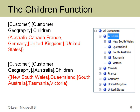The next function you'll use a whole lot is the children function. In the first example I have customer.customergeography.children. I'm saying in the customer dimension, in the customer geography hierarchy, give me the children. The default value at the top of that hierarchy is all customers, so when I ask for its children it goes down one level and gives me just the children at that level.